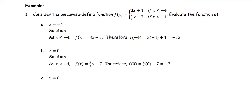Consider the piecewise function f(x) equals 3x plus 1 if x is less than or equal to negative 4, and f(x) equals 2 thirds x minus 7 if x is greater than negative 4.